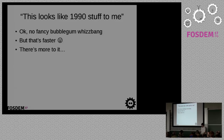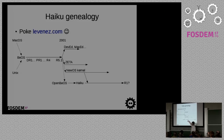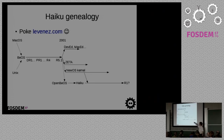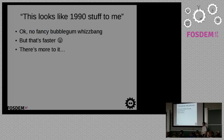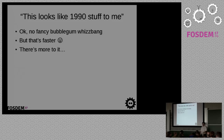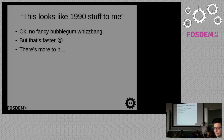We actually forked the NewOS kernel, which was written by an ex-Be engineer who was frustrated because he couldn't work on the BeOS kernel, so he just wrote his own. You might think this looks like 1990s stuff. Most of us don't really fancy animations. Animations are cool, but when you're in Mac OS switching spaces, you have to wait for the animation to finish, and if you hit the shortcut too many times it just gets confused. We prefer to just have the thing work — and it's faster this way.